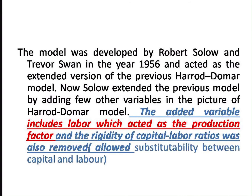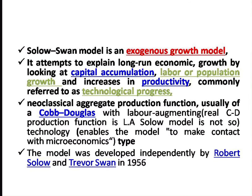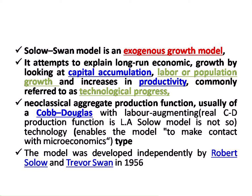This model was developed by Robert Solow and Swan in the year 1956, acting as an extension to the previous Harrod-Domar model. Solow extended the previous model where they added some other variables. The added variables include labor, which acts as a production factor, and rigidity was removed — they allowed substitutability between capital and labor.